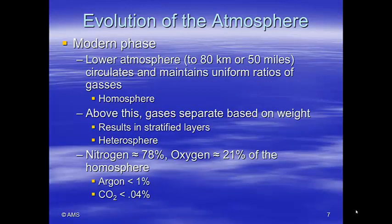Now we have the modern phase. The lower atmosphere, about 80 kilometers or 50 miles, circulates and maintains uniform ratios of gases — this is known as the homosphere. Everything is homogenized, like milk, so there's a good mixture of oxygen, nitrogen, and other gases. Above the homosphere, gases are separated based on their weight, resulting in stratified layers — this is known as the heterosphere.